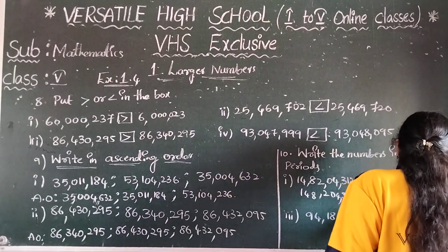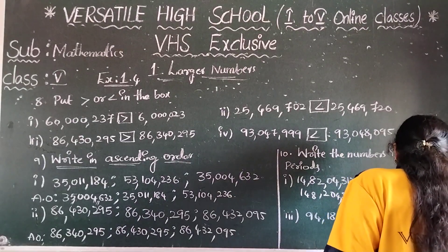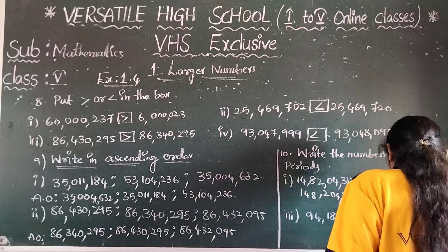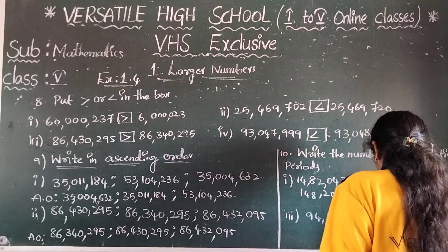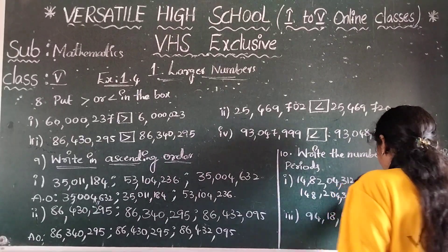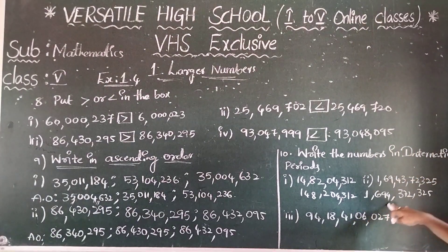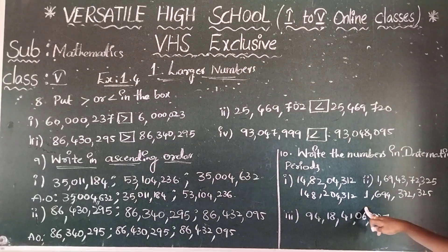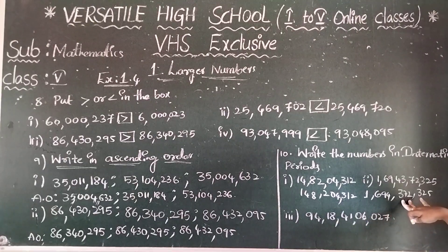The next number: put commas before 325, before 372, before 694. So the number is 1,694,372,325.